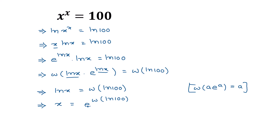This is the value of x, and the approximate value of x is 3.597. This is the solution to our given equation. If you like this video, please subscribe to my channel.